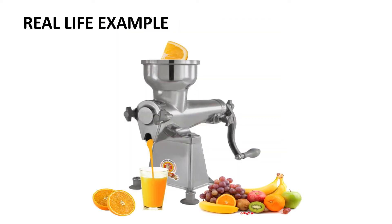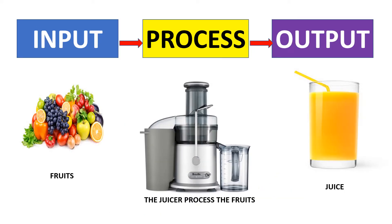Let us now understand what is input, process, and output with a real life example. To make a juice using the juicer, can you find out what is the input, process, and output? The input is the fruits. The process is done by the juicer on the fruits. The output is the juice.